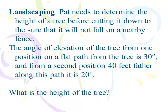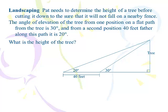Let's do a landscaping problem. Pat needs to determine the height of a tree before cutting it down to make sure it will not fall on a nearby fence. The angle of elevation of the tree from one position on the flat path is 30 degrees. And from the second position, 40 feet farther along the path, it's 20 degrees. Find the height of the tree. Let's draw it out. This should look a little familiar. This is really the two triangles problem. Triangle inside of a triangle type problem. The tree is off there to the right. I think if you find the angle next to the 30 degree angle, this all falls into place. That's what I've always thought. That's the one angle you need to be able to find.